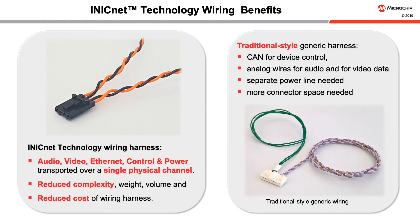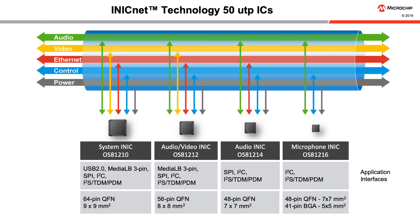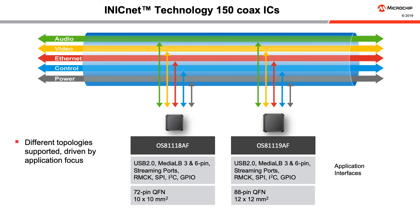There is a family of iNIC 50 UTP ICs. They differ in the application interfaces they provide and are targeted towards different types of system components, providing cost and size flexibility. The various multiplex channels transported by iNIC NET can be routed to application interfaces like SPI, I2C, I2S, and others. There are two variants of the iNIC NET 150 coax ICs. The OS-8118AF uses a single network interface, while the OS-8119AF has two network interfaces to implement a daisy chain topology.